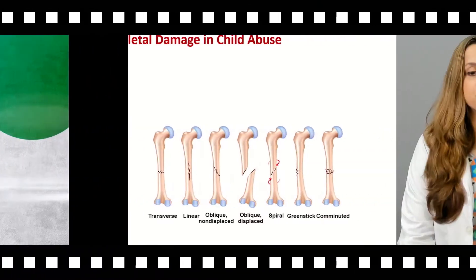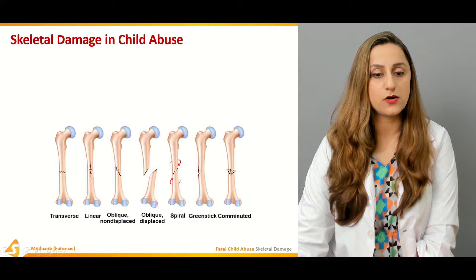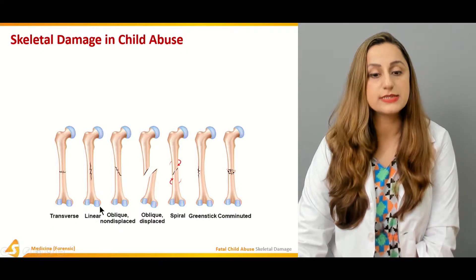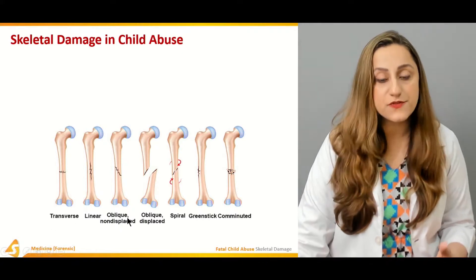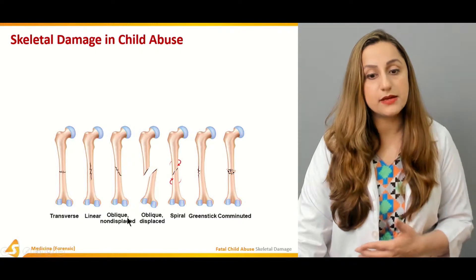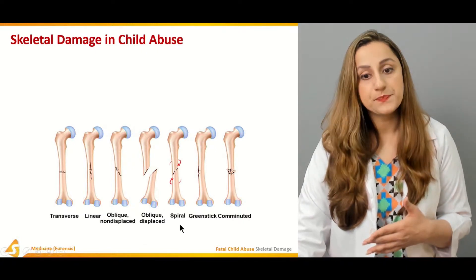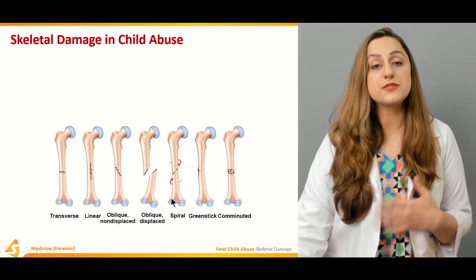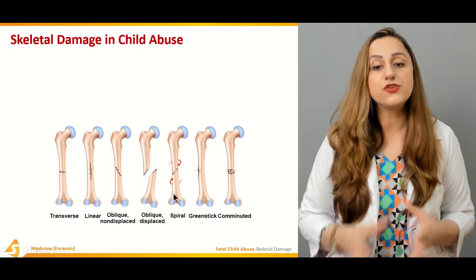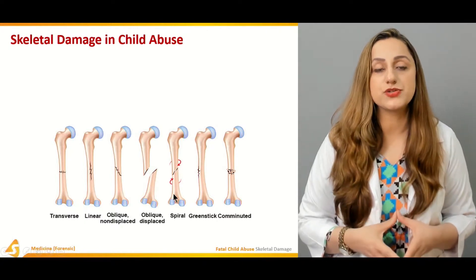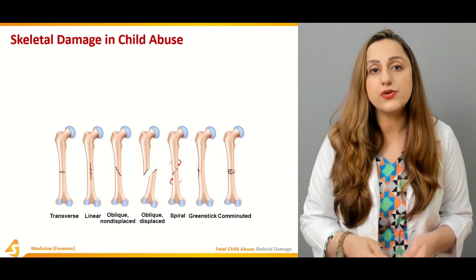The different types of fractures that one can observe are transverse fractures, linear fractures, oblique non-displaced fractures, oblique displaced fractures, and spiral fractures. We also have greenstick fractures, which are not easy to diagnose on radiographs.